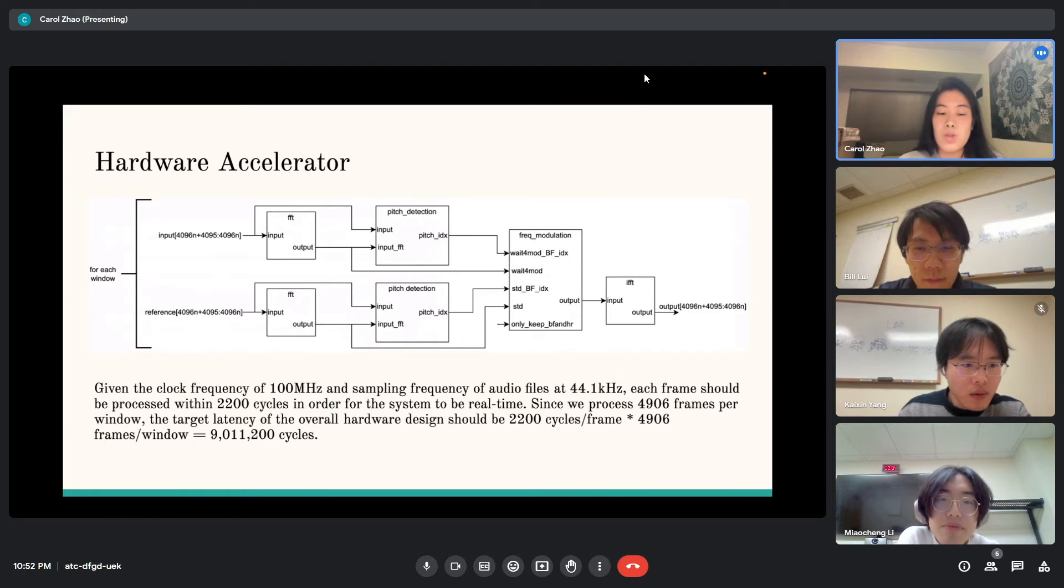First we perform FFT on each window to obtain their frequency domain representation. We then use pitch detection to find the fundamental frequency of that window. Then we perform auto-tuning with frequency modulation and perform IFFT to get back the time domain representation of the tuned window. Given the clock frequency, sampling frequency, and the window size, in order for our system to do real-time, the target latency of the system is a little over nine million cycles.